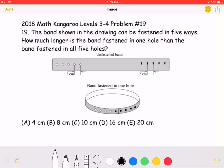This is the 2018 Math Kangaroo Levels 3-4, problem number 19. The band shown in the drawing can be fastened in five ways. How much longer is the band fastened in one hole than the band fastened in all five holes?